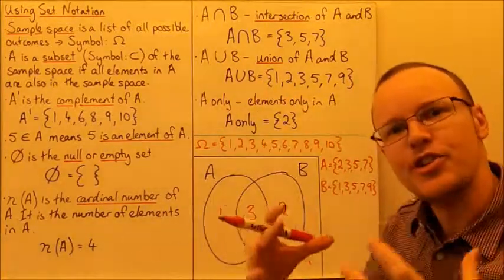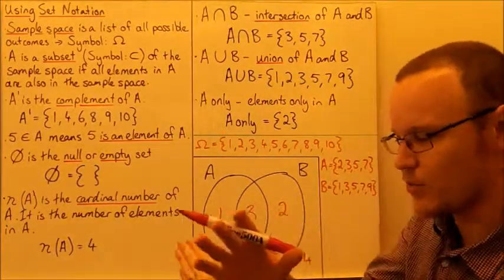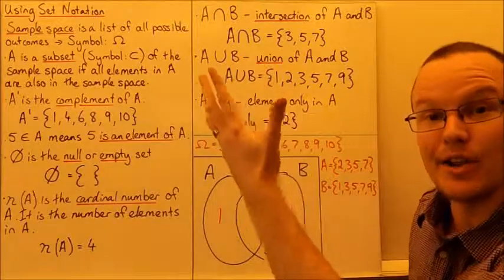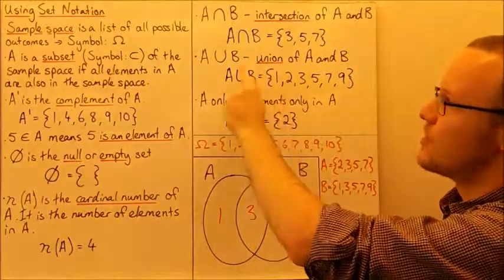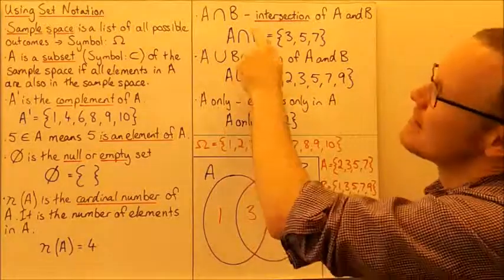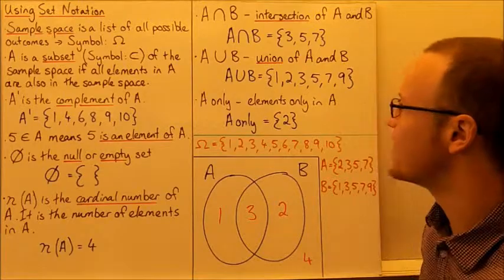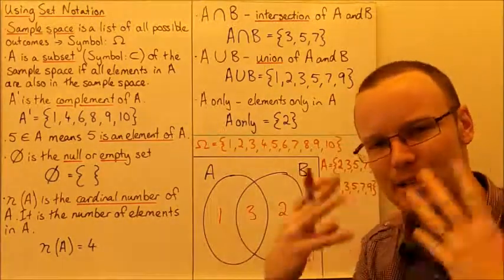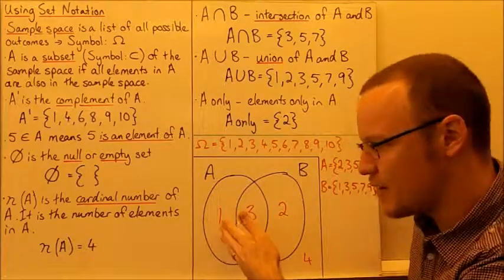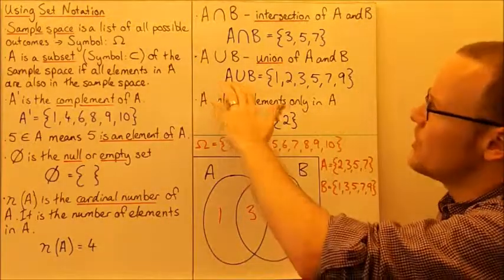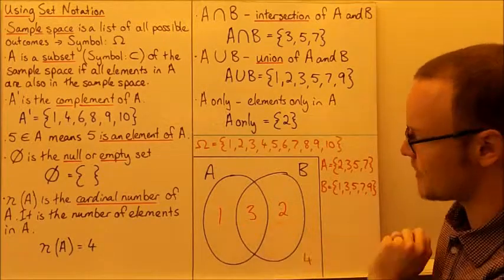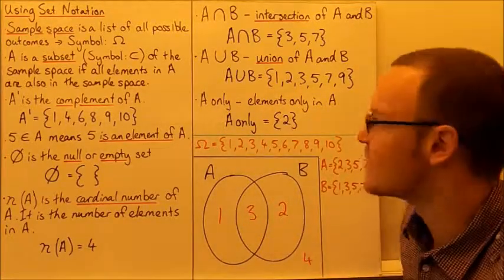A union B is where we bring things together. Just like an intersection is where they cross over, a union is where we bring all things together. The symbol looks like a U — that's a good way to remember it. So the union of A and B has all of the elements of A and B combined: 1, 2, 3, 5, 7, and 9. There are 6 values in A union B, because 1 plus 3 plus 2 equals 6.